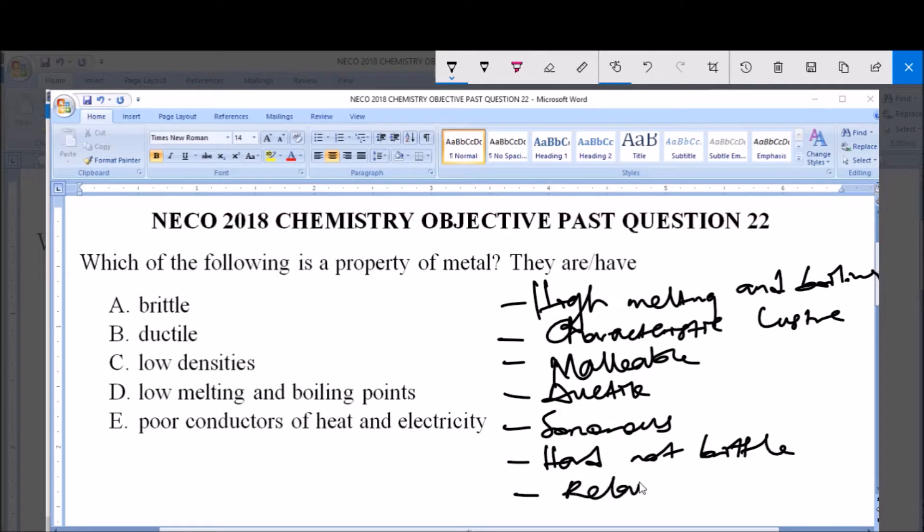Metals have relatively high density, that is when compared to other elements.